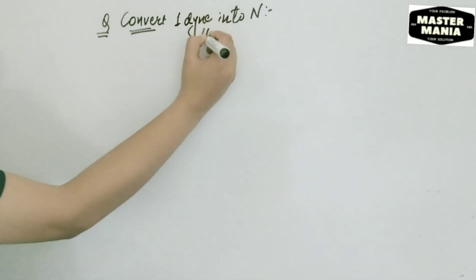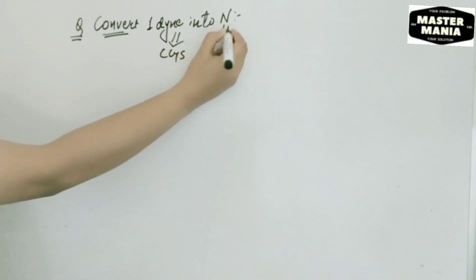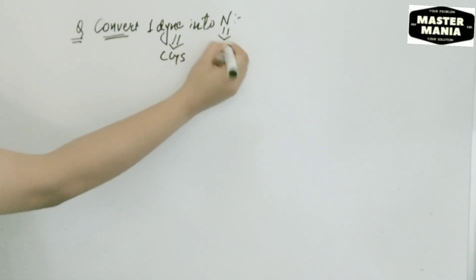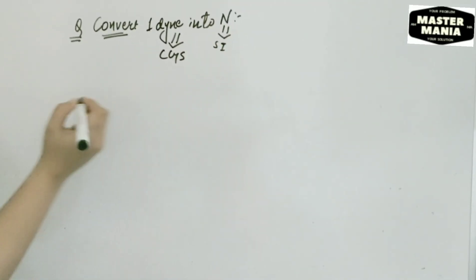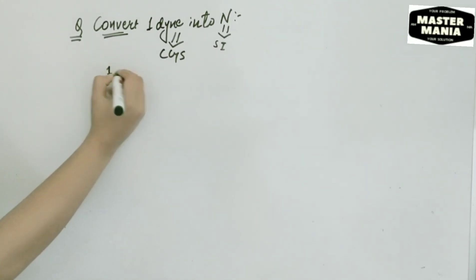Hey guys, welcome back to Mastermania with Sisters. In this video we are going to do this question: convert one dyne into newton. Dyne and newtons are the units of force. Dyne is the CGS unit and newton is the SI unit, so basically we need to convert the CGS unit into the SI unit.